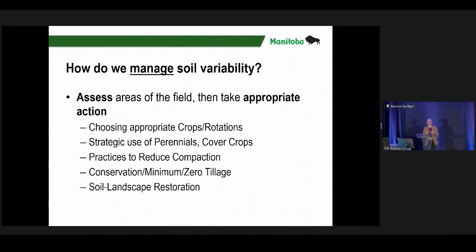When we talk about building soil and resilience, we talk about good crop choice and good crop rotation. Canola-canola-canola is not a rotation — even though some still think it is. We also talk about strategically using perennials and cover crops. When I say strategic use, it's about thinking about where these things need to be in your field. If you have low-lying areas or areas needing a little TLC, adding perennials into that system might help.